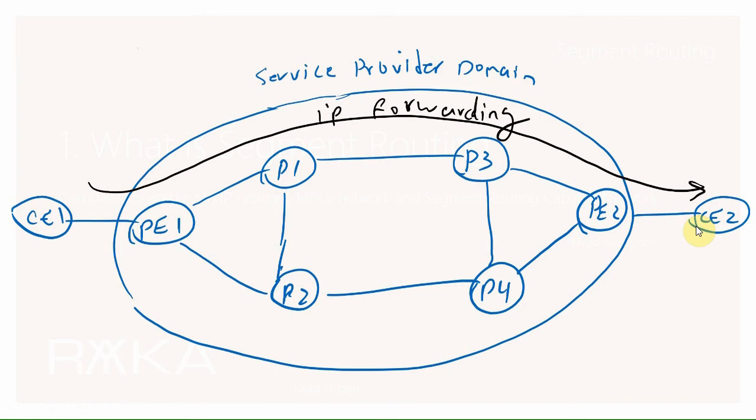Another problem is that you cannot route your voice and data traffic through different paths. The requirements for data traffic and voice traffic are different. Data traffic requires high bandwidth and voice traffic requires minimal delay. So it may be required to direct voice traffic and data traffic through different paths to fulfill their quality of service requirements.